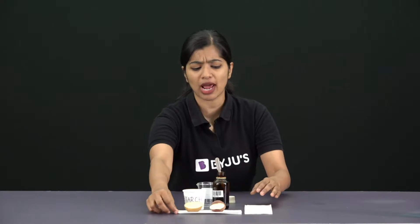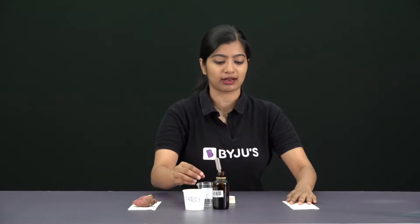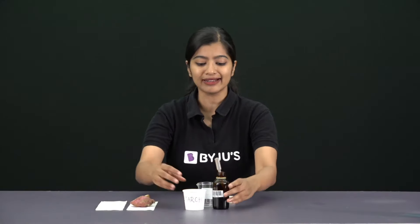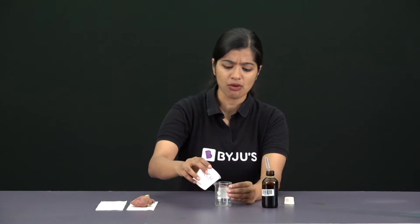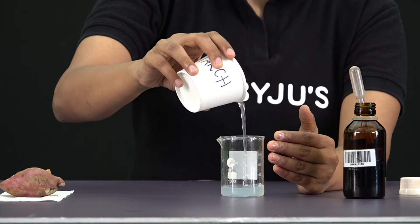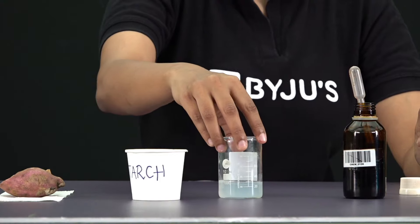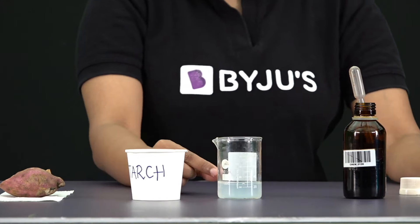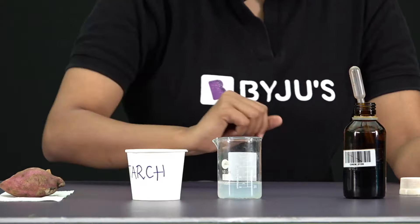Before we test on the food items, we need to visualize this blue-black color. So I have starch powder which I had dissolved in warm water, and it looks something like this. I have put it in a transparent beaker and if you notice, it is having a whitish color.